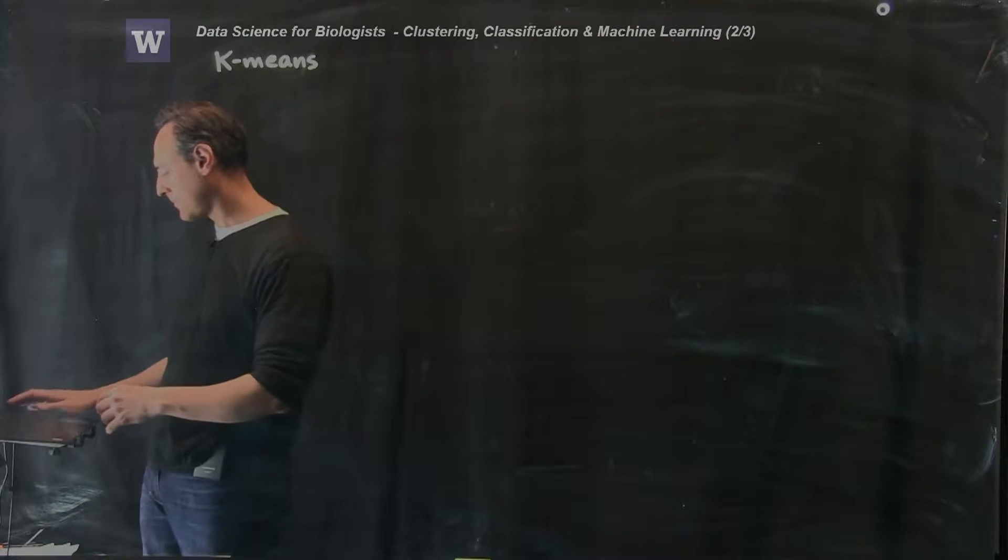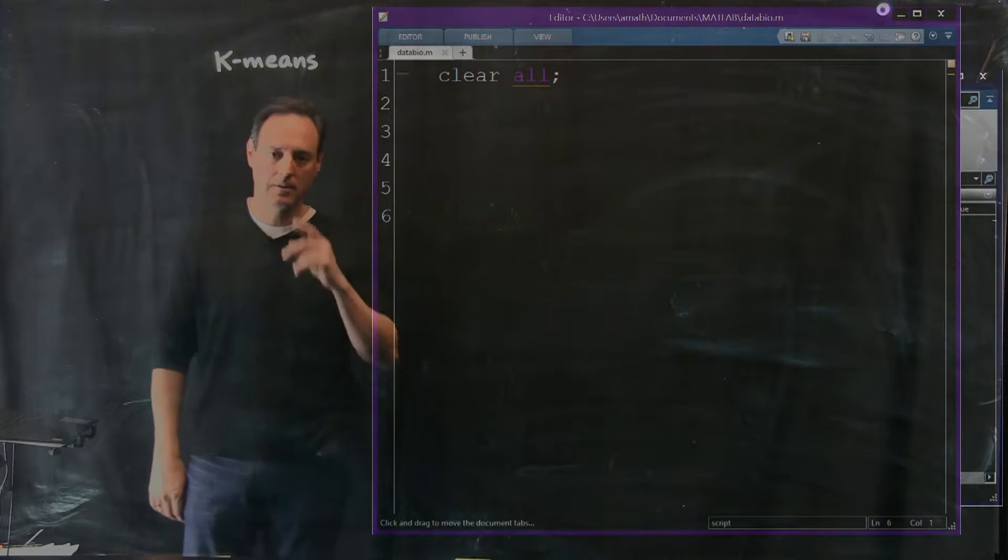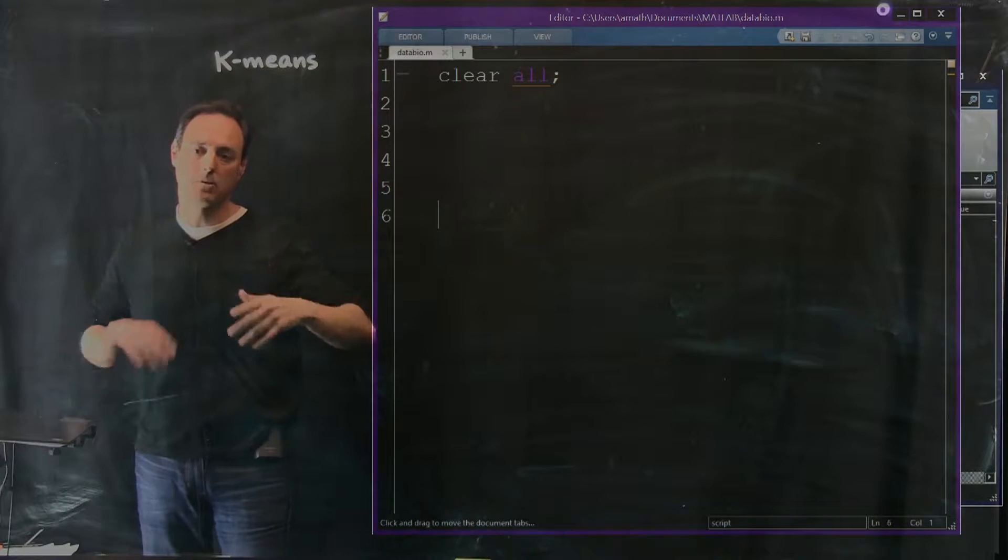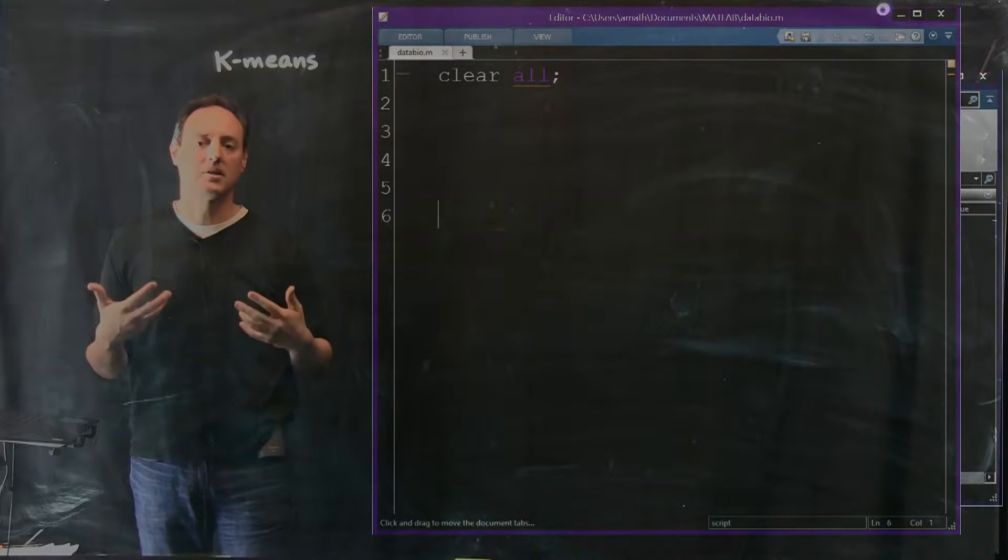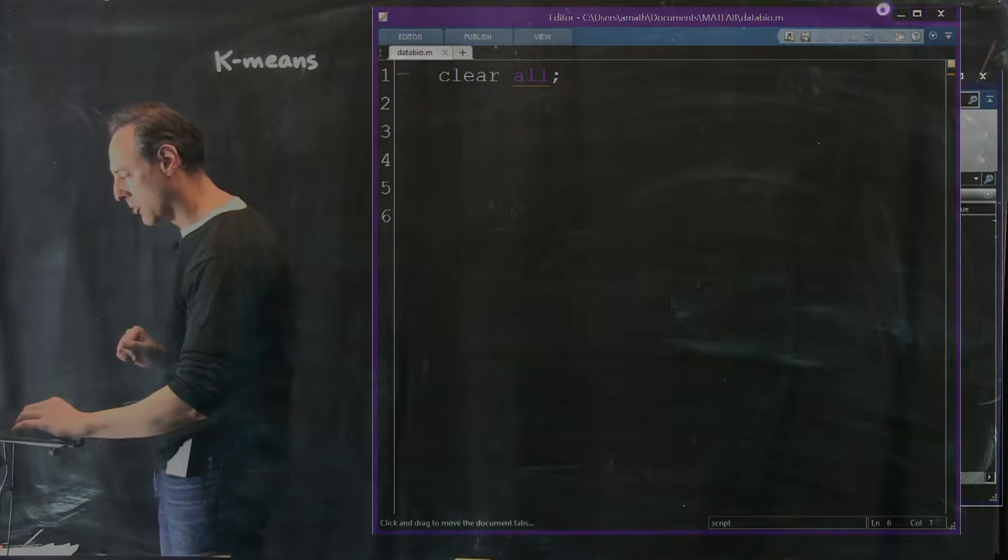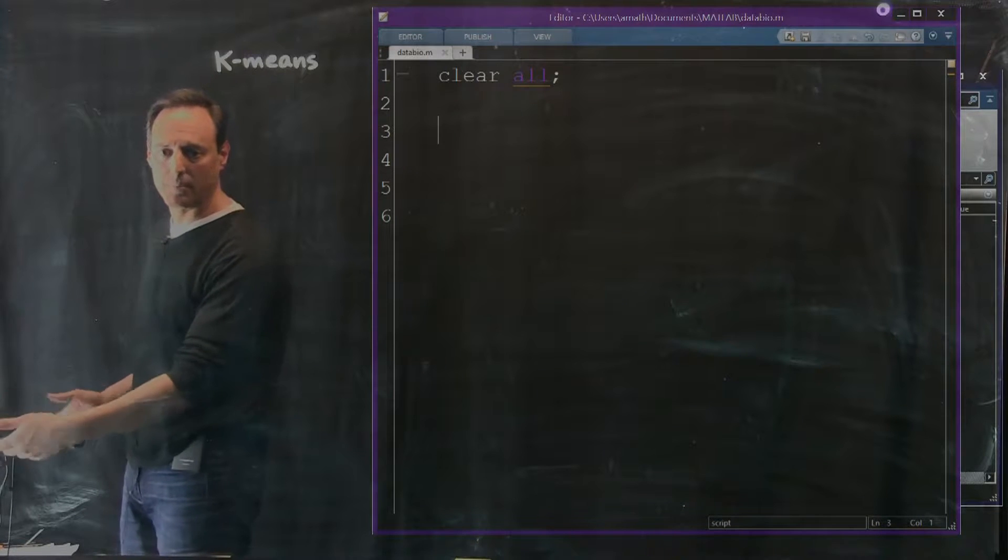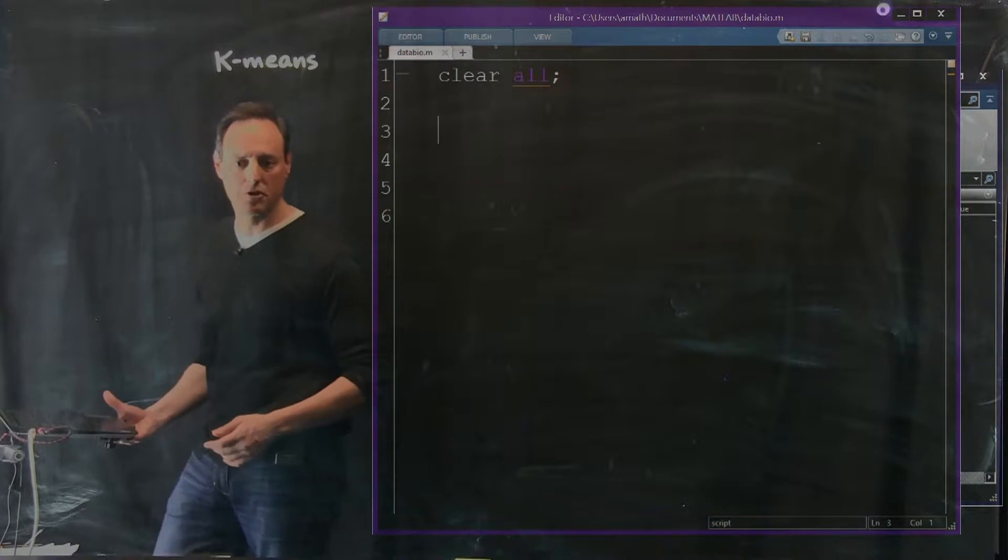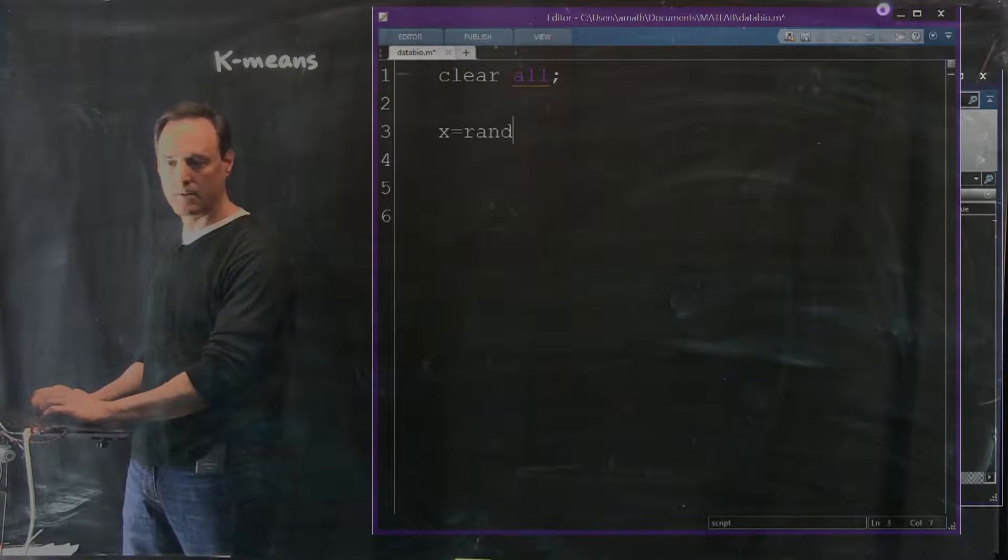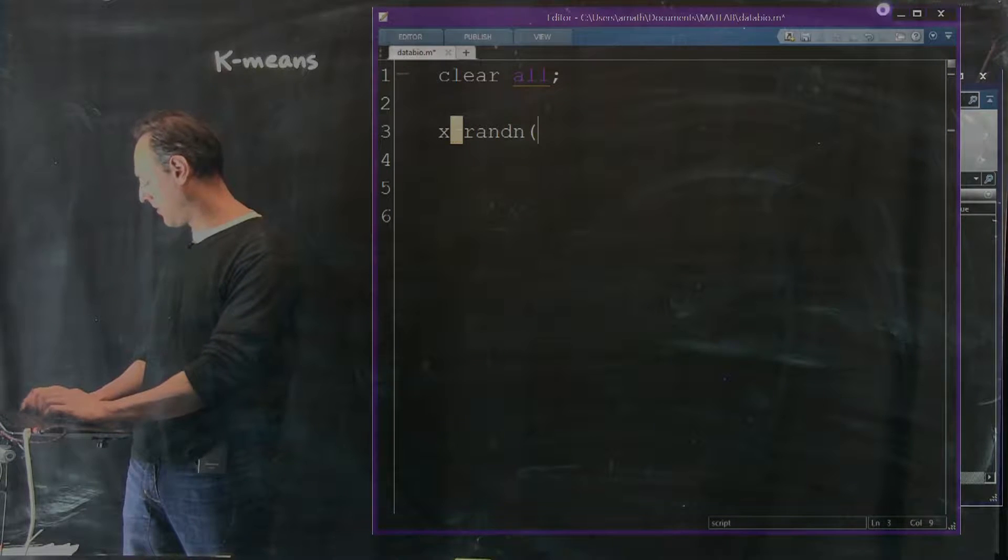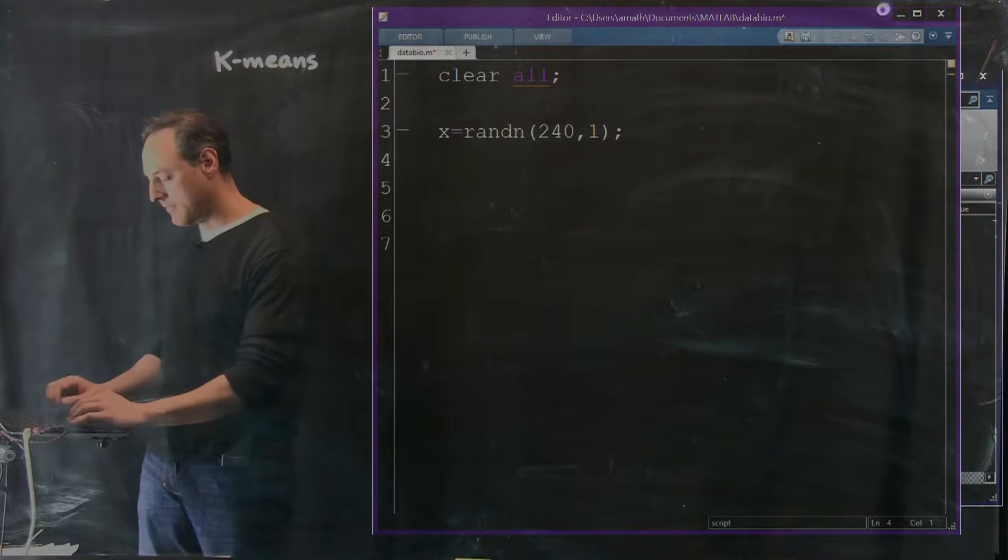So let's go ahead and build this thing out. I'm going to switch over to MATLAB. Here it is, we've got a programming box here. There is actually a k-means algorithm in MATLAB and I'll show it to you at the end, but the first thing I want to do is illustrate the process of how k-means works.